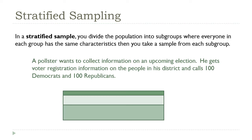For example, in this scenario, a pollster is doing some kind of political poll — political surveying. When you're talking about politics, it's natural to break people down by party. Say, for example, focusing on Democrats versus Republicans. In this scenario, the person samples 100 people from each group.